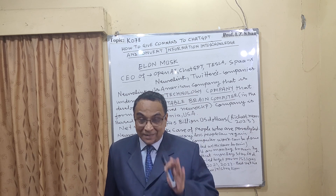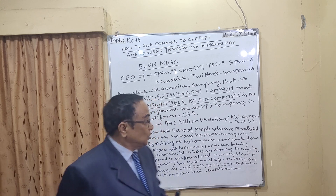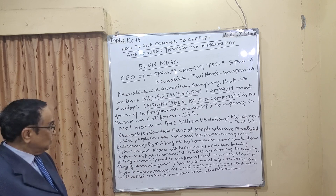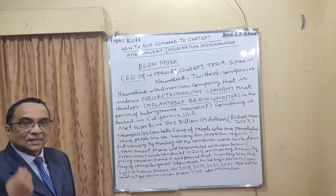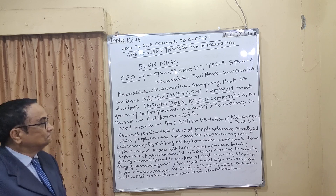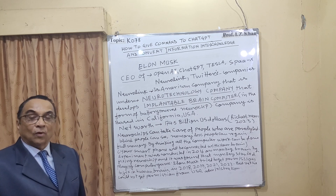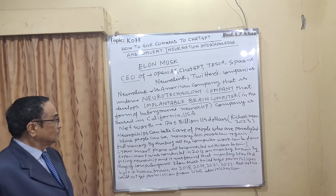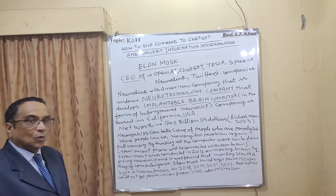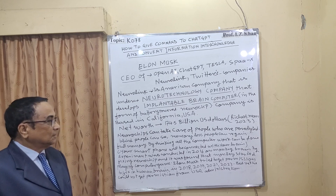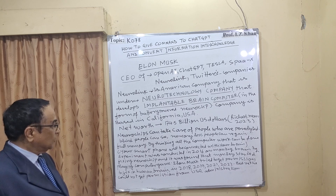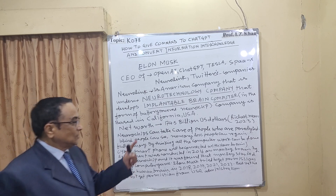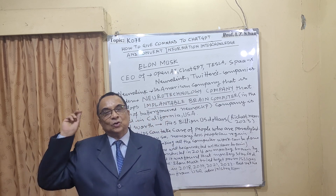There is still reservation from the US government. The company is based in California, USA. The net worth of Elon Musk is 174.4 billion US dollars, and he is the richest man in the world according to Forbes report by 2023. Neuro chips can take care of people who are paralyzed; blind people can see; memory-loss people can regain full memory. Your smartphone will be connected with your brain — that is a very interesting part.